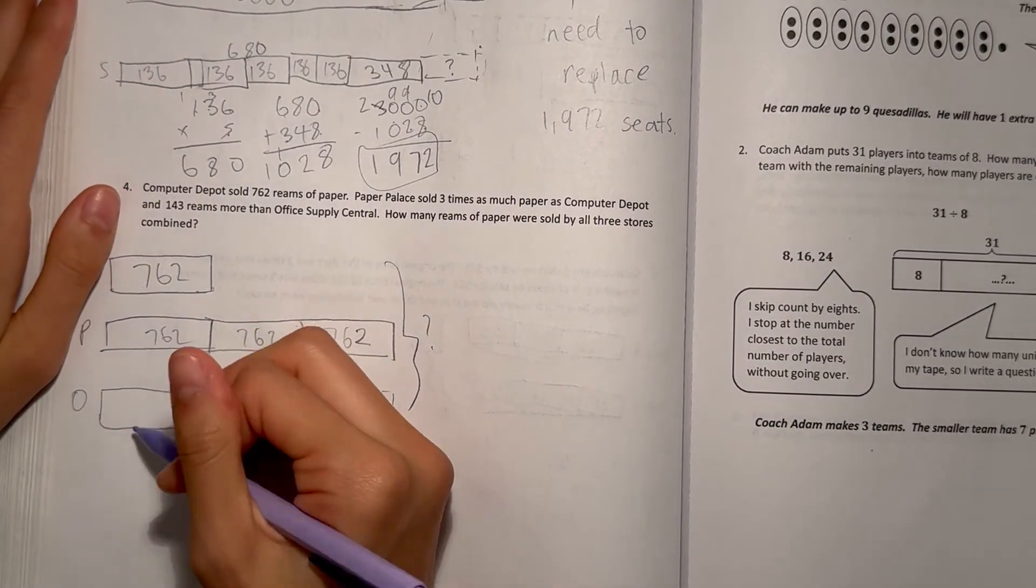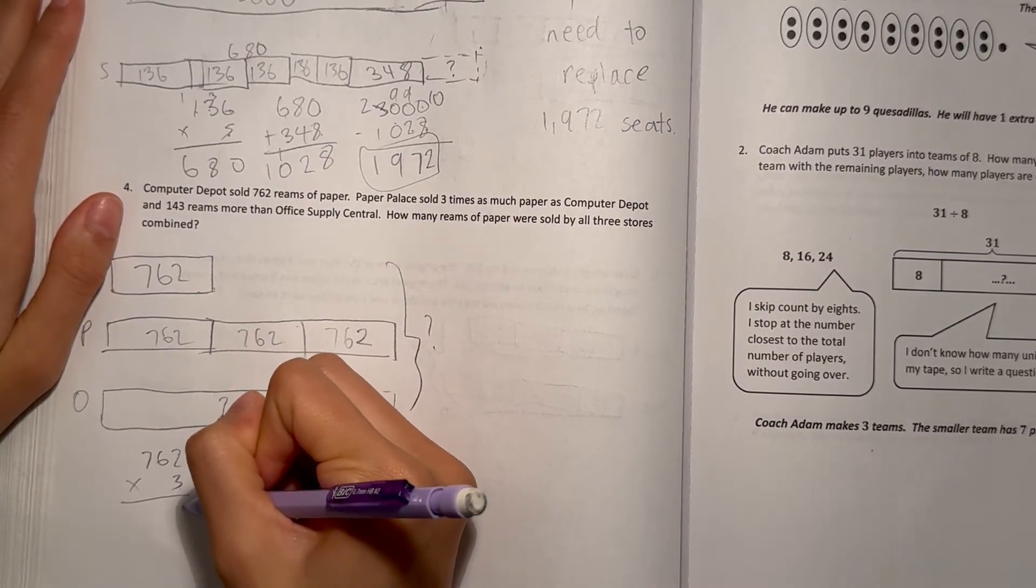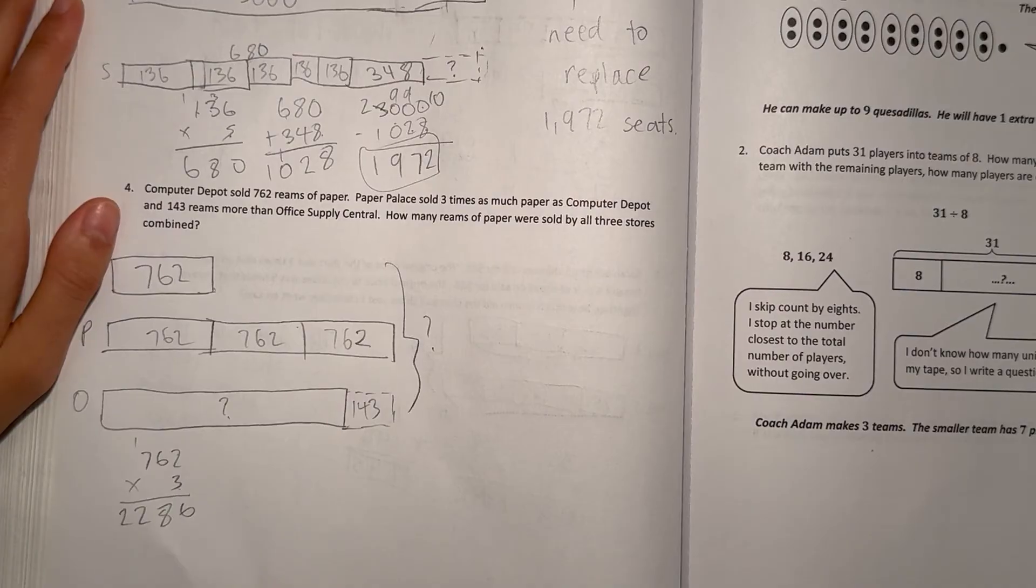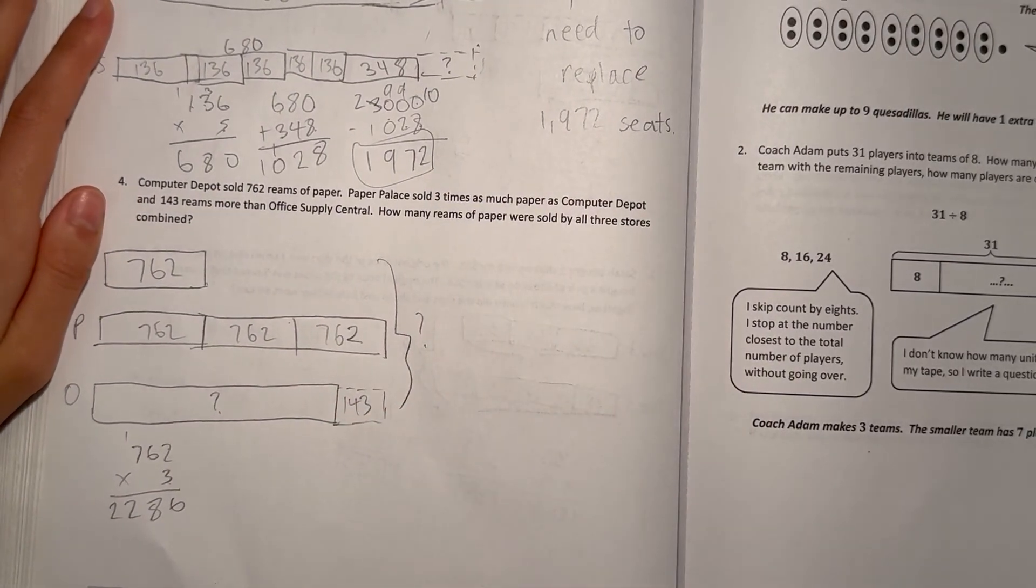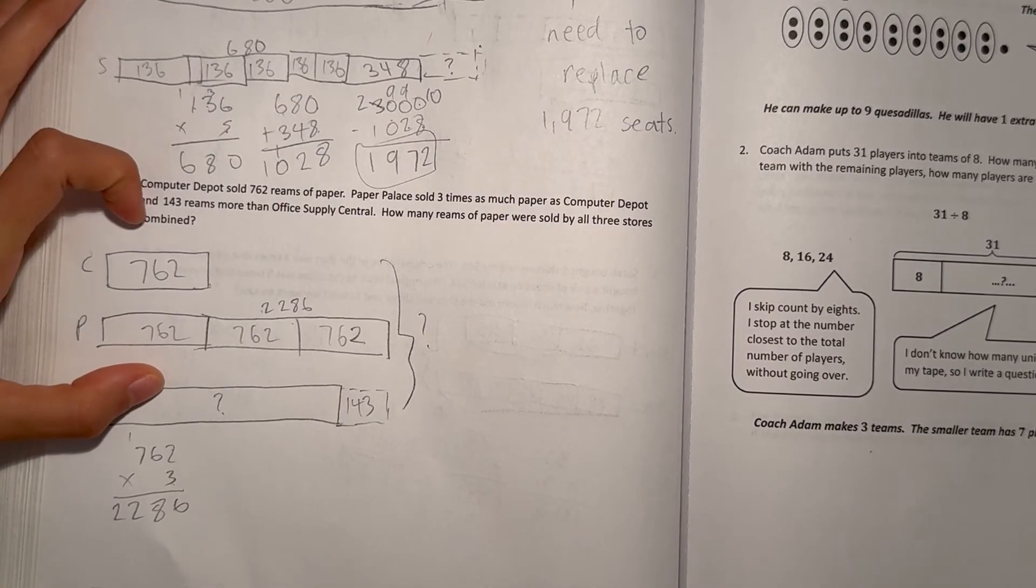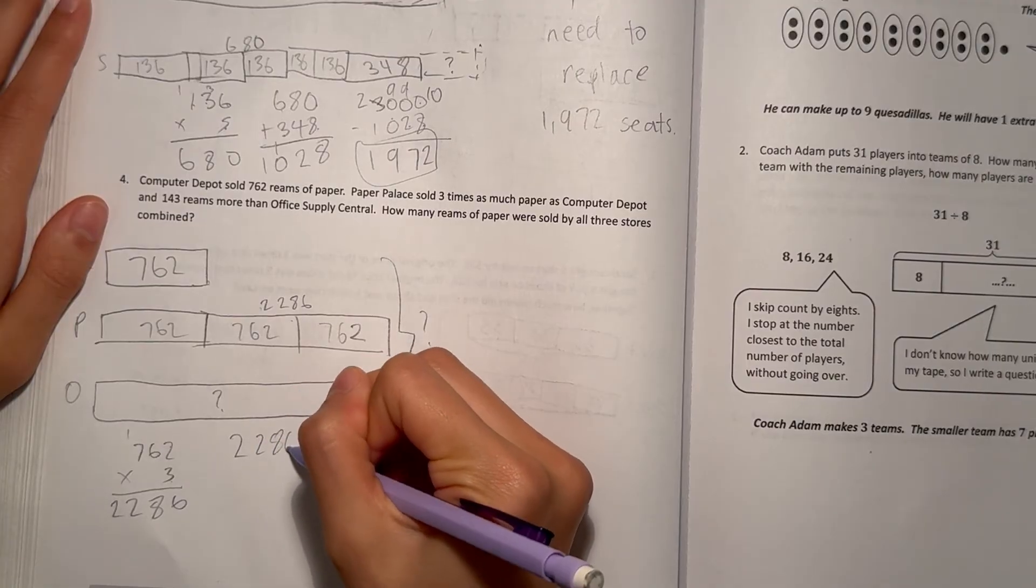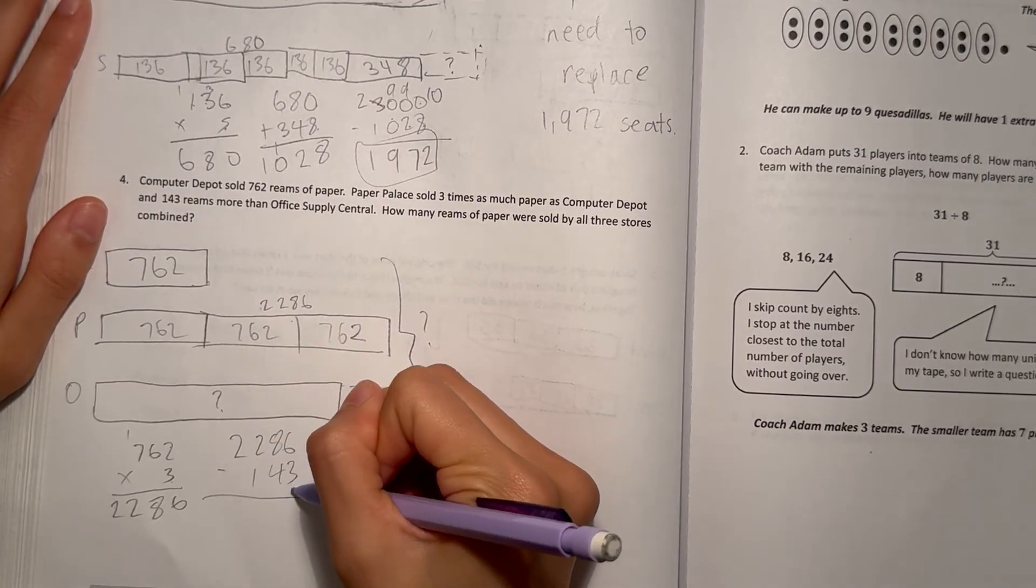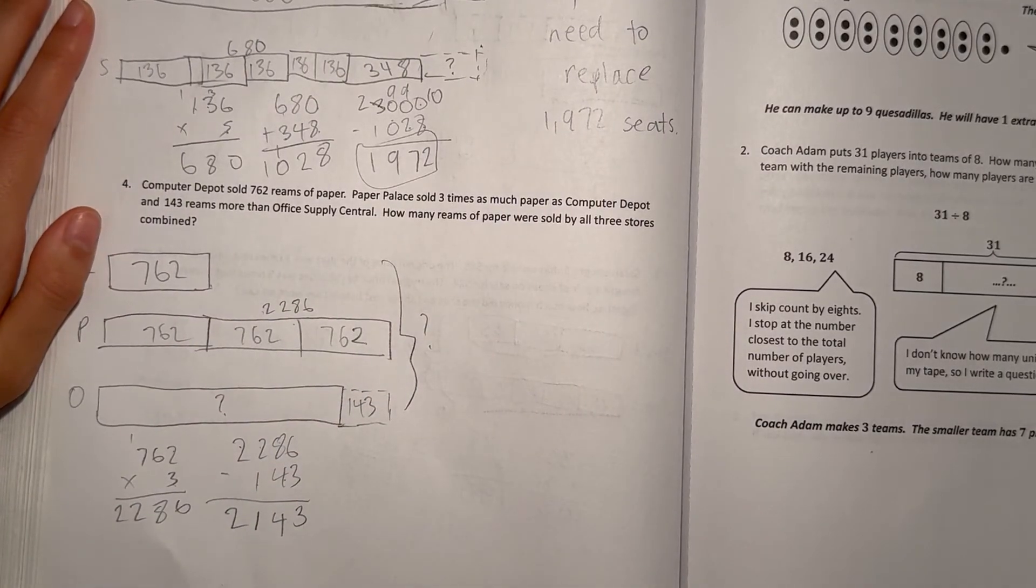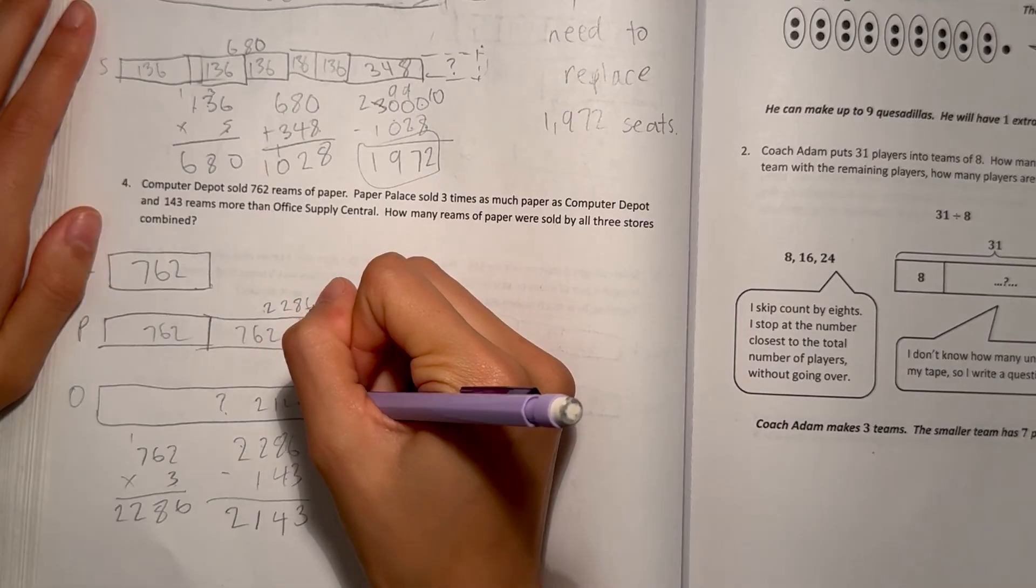Let's start by finding out Paper Palace. So 3 times as much as Computer Depot, 762 times 3. 2 times 3 is 6. 6 times 3 is 18. 7 times 3 is 21 plus 1 is 22. So 2,286. Let's find Office Supply Central. So they sold 143 reams less than 2,286 because that's how much Paper Palace sold. So 2,286 minus 143. 6 minus 3 is 3. 8 minus 4 is 4. 2 minus 1 is 1. And 2 is just 2. So our answer is 2,143 for Office Supply Central.